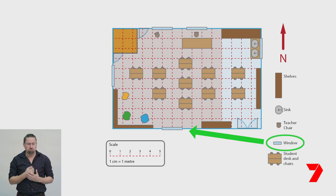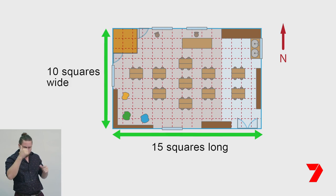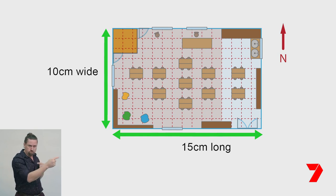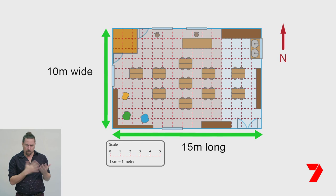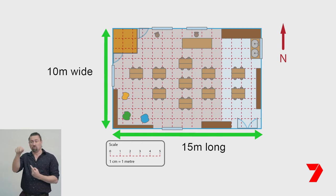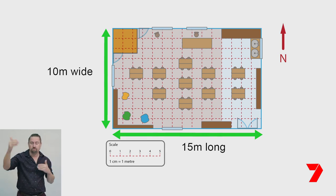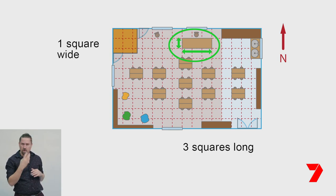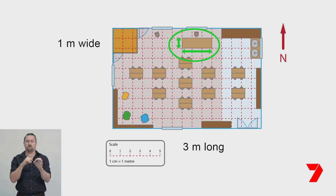Now let's use the scale to find the dimensions of the classroom. There are 15 squares along the length and 10 squares along the width — 15 centimetres long and 10 centimetres wide on the plan. The scale tells us each centimetre is one metre in real life, so the classroom is 15 metres long and 10 metres wide. The teacher's desk is three squares long and one square wide, meaning it is three metres long and one metre wide in real life — that's a big desk!